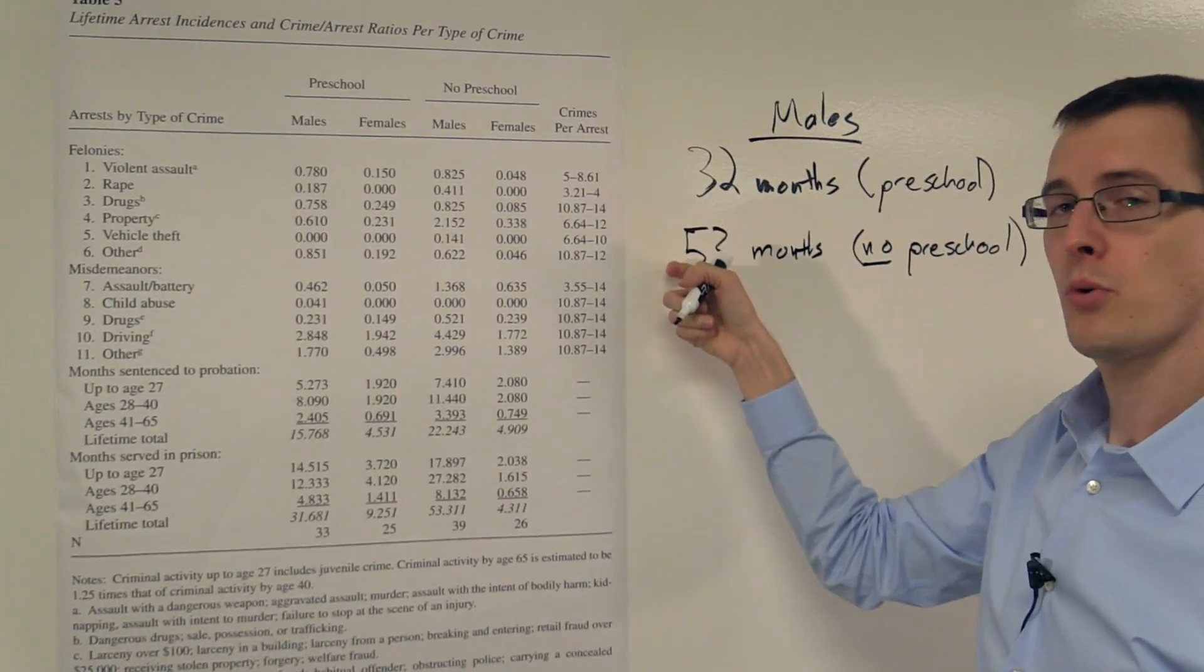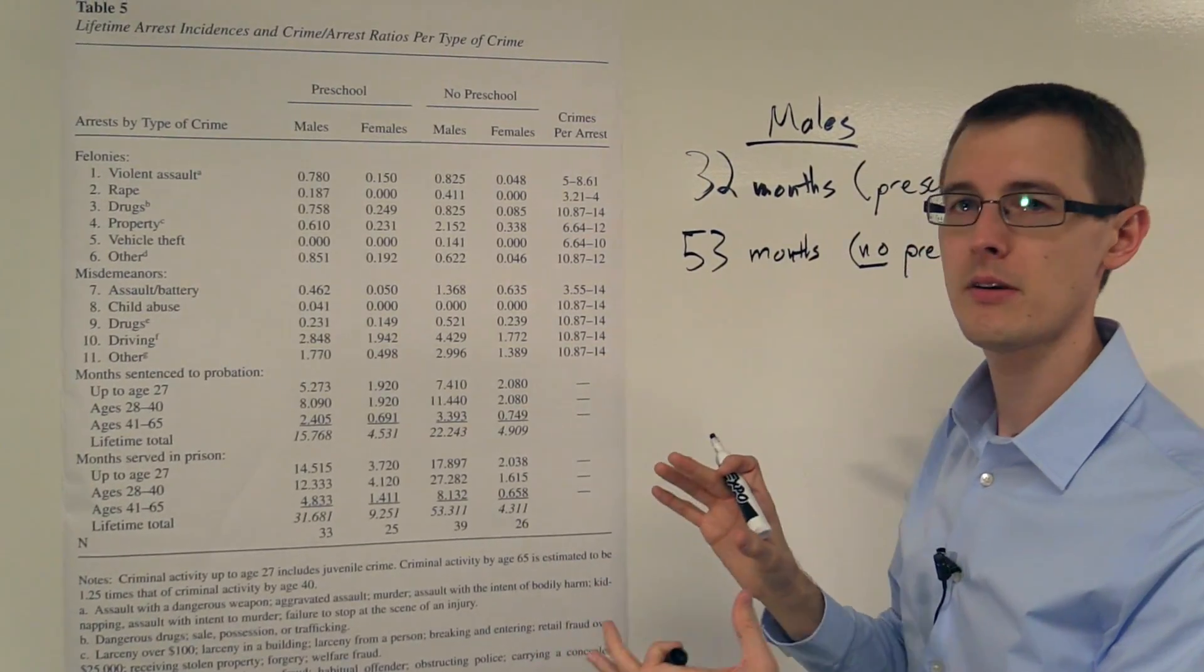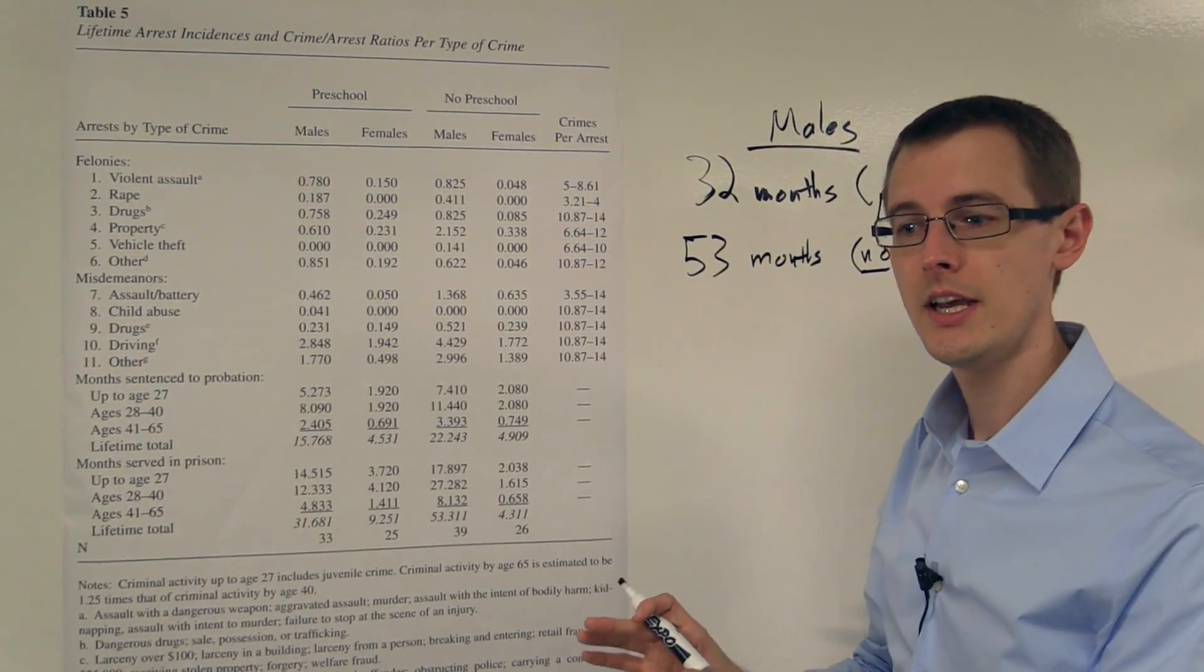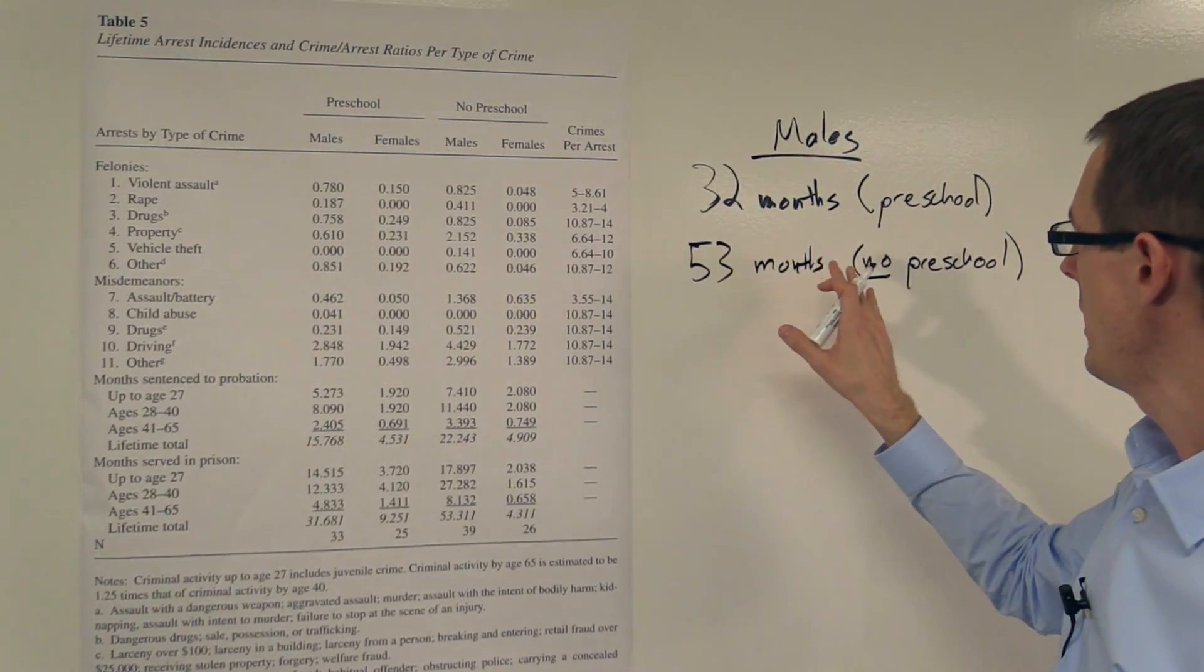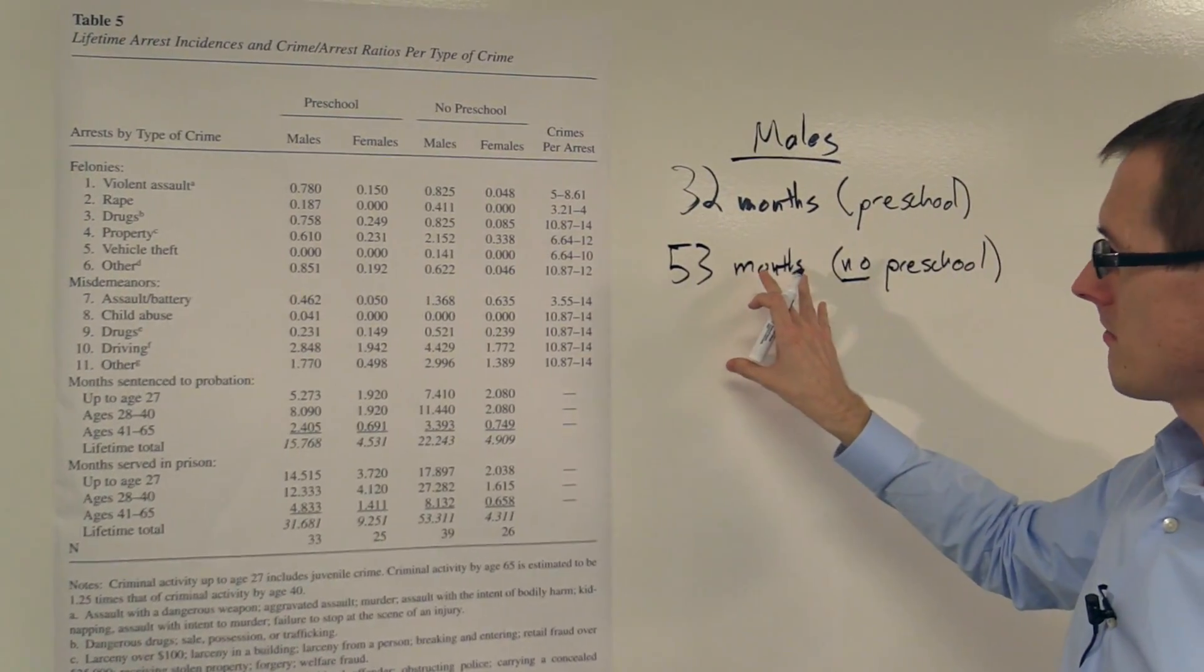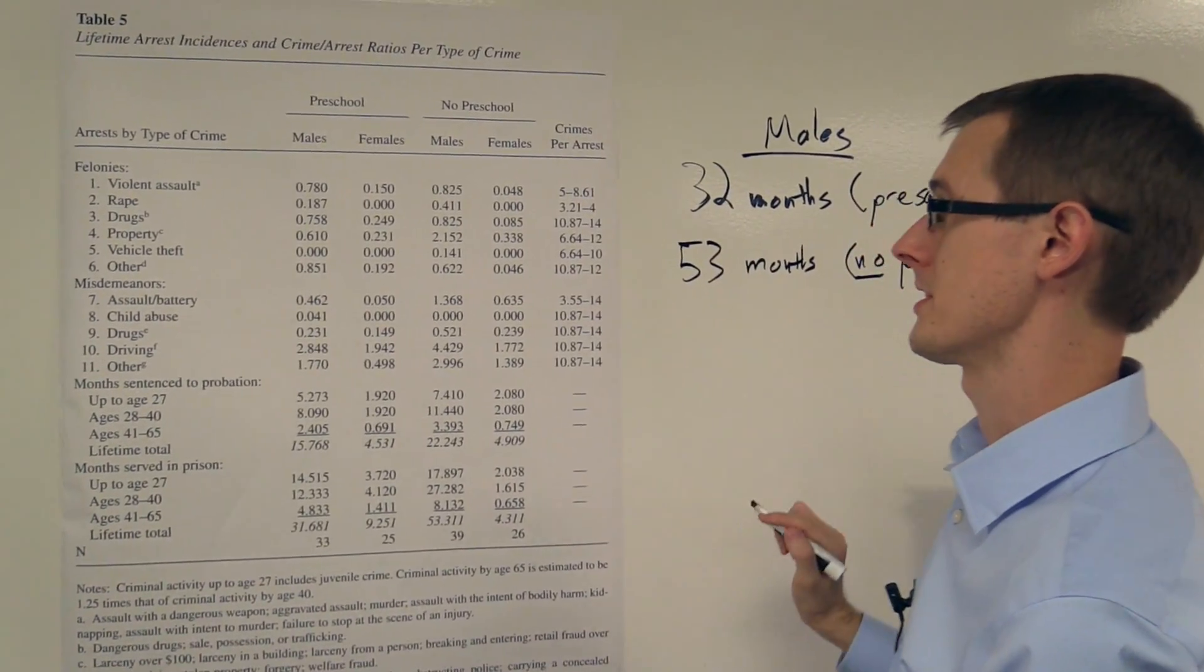And by the way, both of these numbers are quite large, and that's because the students were pulled from a specific population of students, low-income, high-risk students. So, this is a nice finding, going to preschool looks like it decreases lifetime months served in prison.